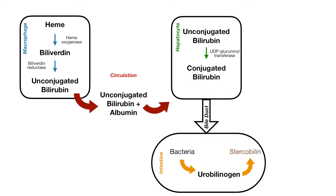Our unconjugated bilirubin goes into the circulation where it is bound by albumin. This is important to know because unconjugated bilirubin is lipid soluble, so it cannot travel through the circulation on its own — it needs to be bound by albumin. That unconjugated bilirubin is then taken up by the hepatocytes where it will undergo conjugation.